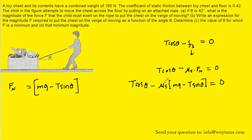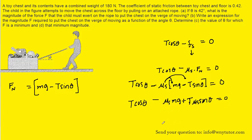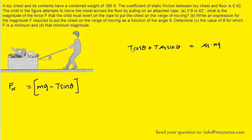We'll distribute the coefficient of static friction. Once we do that, we'll have mu_s mg. Notice because this negative sign is distributed to the negative sign, we would have plus, giving us T mu_s sine theta. That's still equal to zero, and we still have T cos theta. Let's add the mu_s mg over to the right-hand side. Since both terms on the left side contain T, we can factor it out, leaving us with cos theta plus mu_s sine theta inside the parentheses.